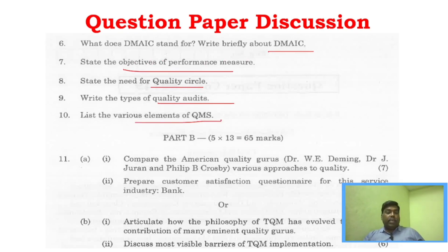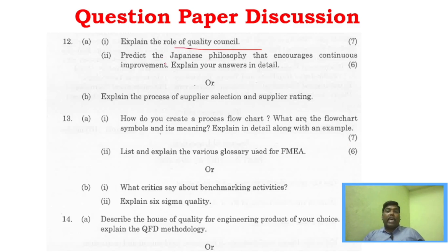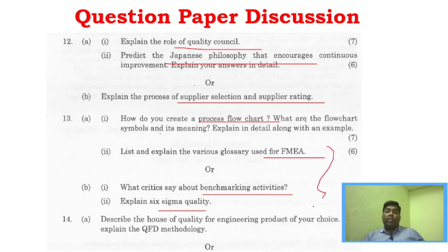For Part C, topics include customer satisfaction questionnaire for service industry and banking. Similarly, philosophy of TQM and barriers of TQM. Unit 2 covers quality council and Japanese philosophy of continuous improvement, supplier selection, and supplier rating. Unit 3 covers flow chart preparation, FMEA, benchmarking, and Six Sigma quality — all very important questions.